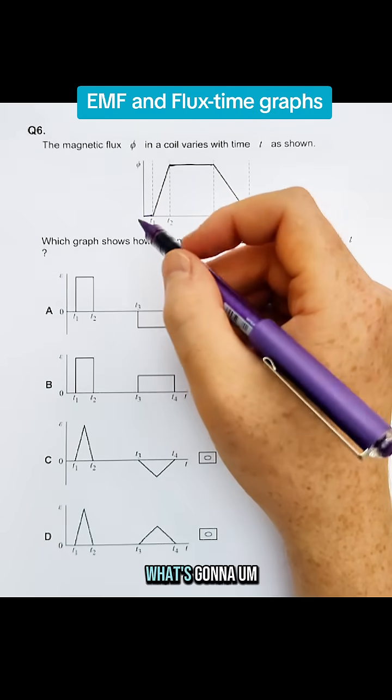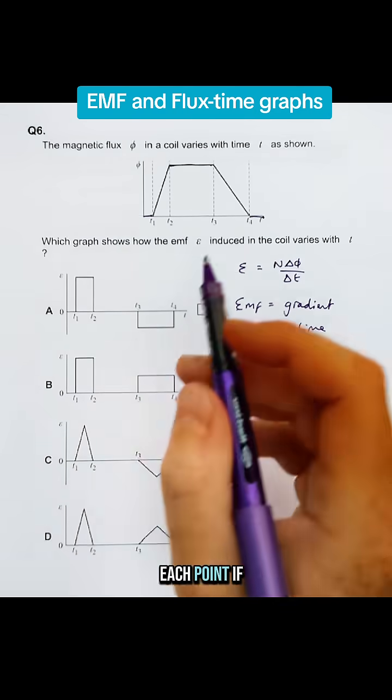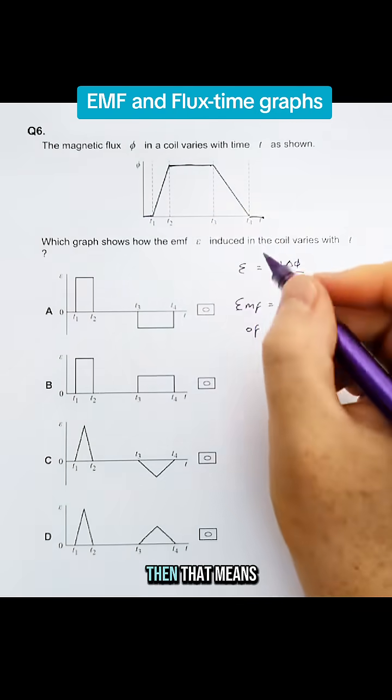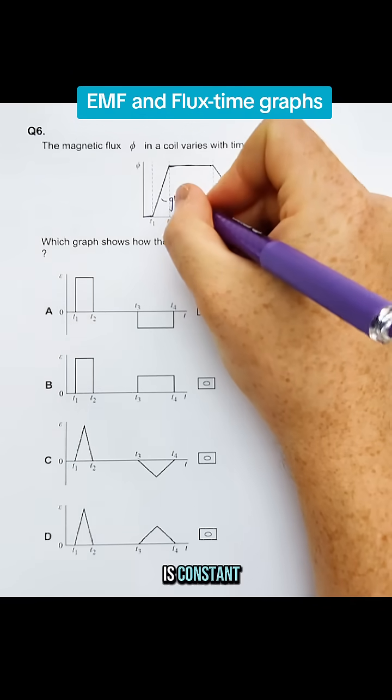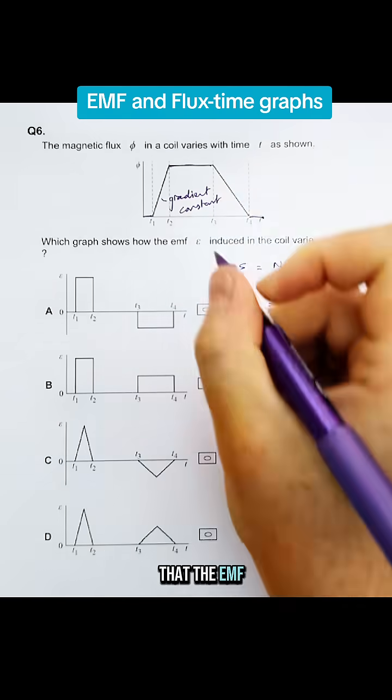But what we have to look at is how we can actually describe the EMF at each point. If it's a straight line here then that means that the gradient is constant. So if it's a constant gradient then that means that the EMF is also constant.